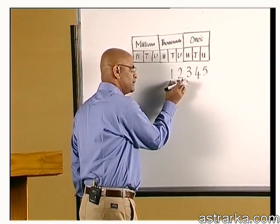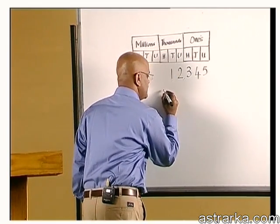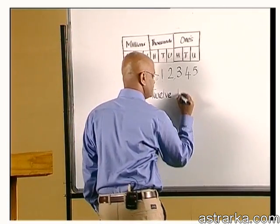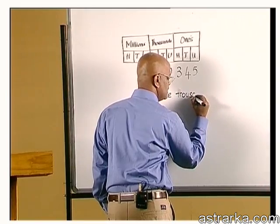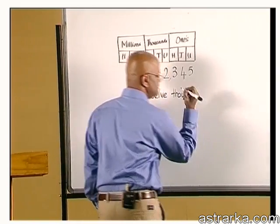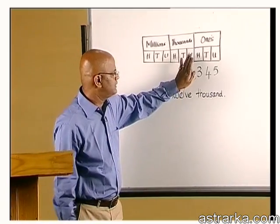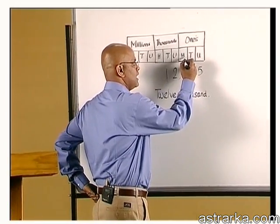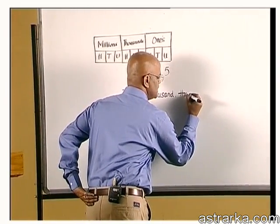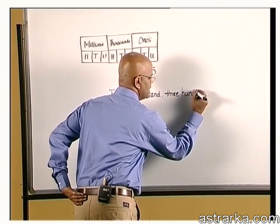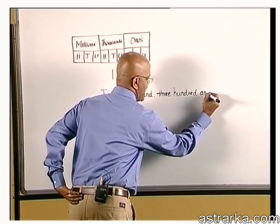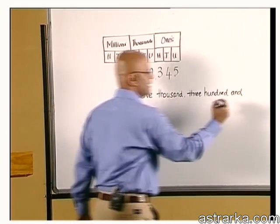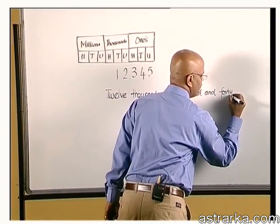Where does this 12 occur? The 12 occurs in the thousands period, right? Therefore, the number is 12, 1000. With this, we have accounted for the 12 in the thousands period. We go to 3, 3, 100, 3 is in the hundreds place, correct? 3, 100 and 4 is in tens place, 45 and 45.